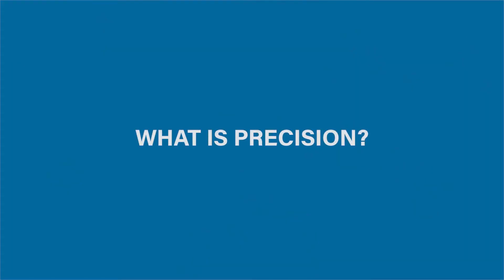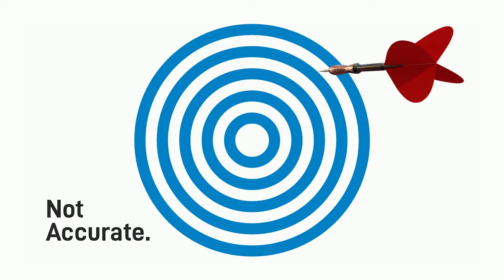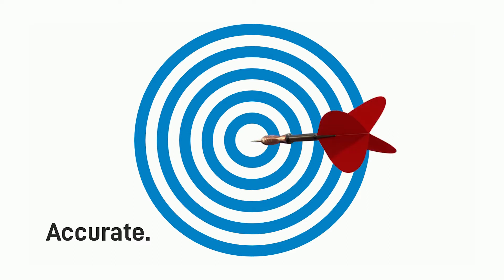But what is precision? Well, let's start with accuracy. You can see this dart was not accurate — we did not hit the center. When we talk about accuracy, we talk about how close to the accepted or actual value you actually are. In this case, we're very accurate. This dart hit the bullseye.